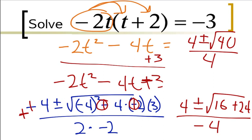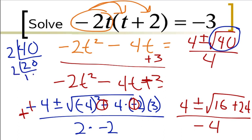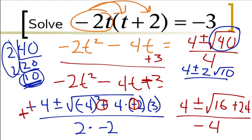We're going to end up doing a Dorito problem, but not yet. I have to do my hockey stick on the 40 first. 40 divided by 2 is 20, divided by 2 is 10, divided by 2 is 5 but I can't do anything with it. So I get one group of 2 pulled out and left with 10. I rewrite this as 4 plus or minus 2 square root of 10 over 4.